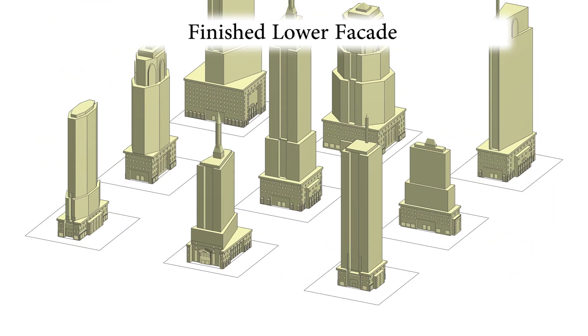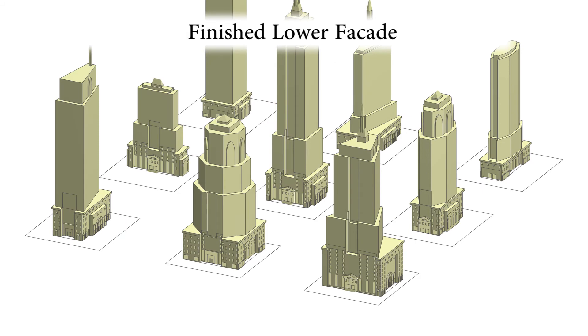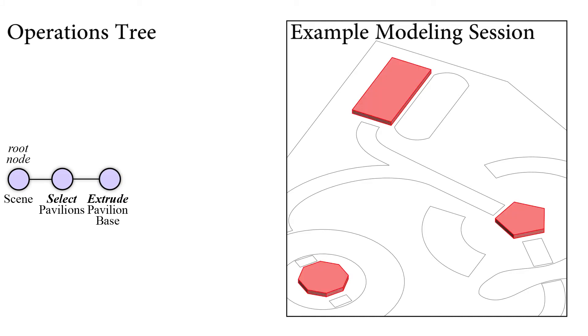Next, we show how to record the modeling session to create any number of varied new facades without further user interaction. Each operation performed during a modeling session can be recorded in an operations tree. On the right, we show a short modeling session. Child operations are limited in scope to the output of their parents.